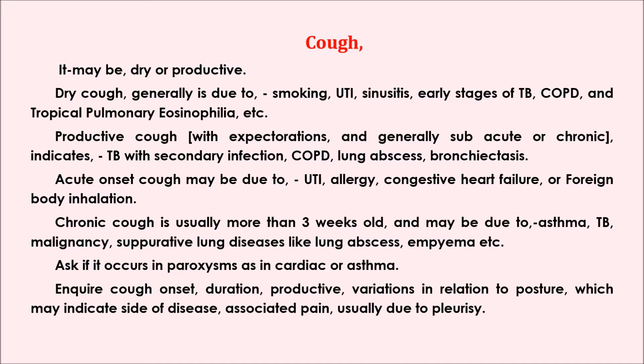Acute onset cough may be due to UTI, allergy, congestive heart failure, or foreign body inhalation. Chronic cough is usually more than 3 weeks old and may be due to asthma, TB, malignancy, or suppurative lung diseases like lung abscess and empyema. Ask if it occurs in paroxysms as in cardiac or asthma. Inquire about cough onset, duration, whether productive, variations in relation to posture — which may indicate the side of disease — and associated pain, usually due to pleurisy.